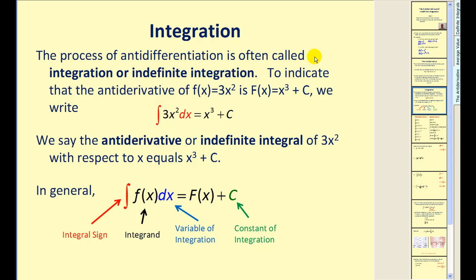The process of anti-differentiation is often called integration or indefinite integration. To indicate that the antiderivative of f of x equals three x squared is equal to big F of x equals x cubed plus c, we write it using this notation. We say the antiderivative or indefinite integral of three x squared with respect to x is equal to x cubed plus c. This symbol here is called the integral sign. This function f of x is called the integrand, and this dx on the end represents the variable of integration. Of course, big F of x is our antiderivative, and c is the constant of integration.